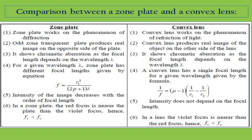Intensity of the image decreases with the order of focal length, because in this case we have multiple foci. In the case of a convex lens, there is only one focal length, so intensity does not depend on the order.